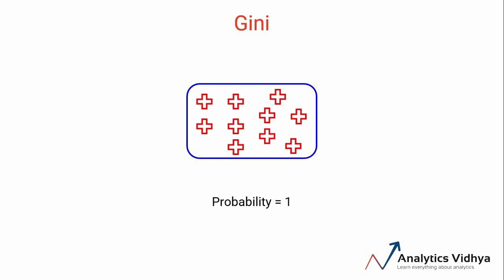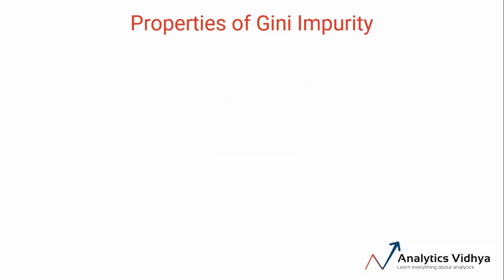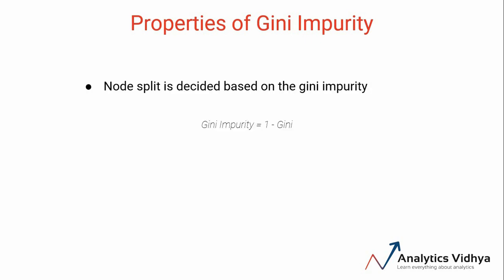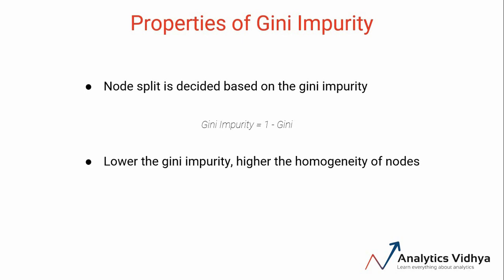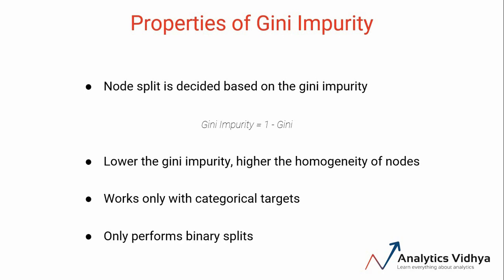Let's look at the properties of Gini impurity. We decide the best split based on Gini impurity, which is 1 minus Gini. Gini denotes the purity, and hence Gini impurity tells us about the impurity of nodes — lower the Gini impurity, the more pure the nodes and the higher the chance of homogeneity. Gini works only in scenarios where we have categorical targets. It does not work with continuous targets — for example, predicting house prices or number of bikes rented. It only performs binary splits, either yes or no, success or failure, splitting a node into exactly two sub-nodes.